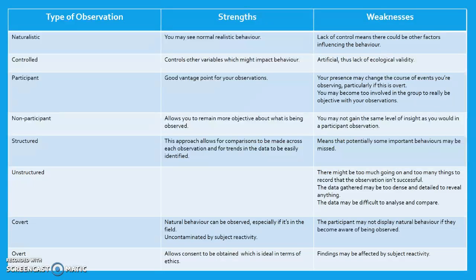Covert: natural behaviour can be observed, especially if it's in the field, and this is uncontaminated by subject reactivity. The participant may not display their natural behaviour if they become aware of being observed. Overt: allows consent to be obtained, which is ideal in terms of ethics. However, findings may be affected by subject reactivity as they know they are being observed.